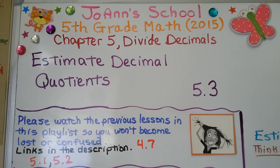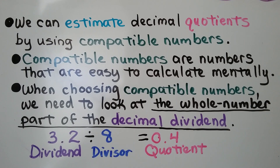Lesson 5.3: Estimate Decimal Quotients. We can estimate decimal quotients by using compatible numbers. Compatible numbers are numbers that are easy to calculate mentally — that's mental math.